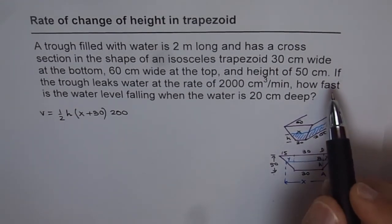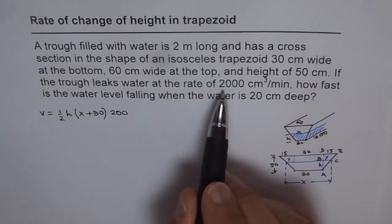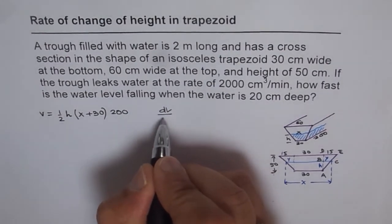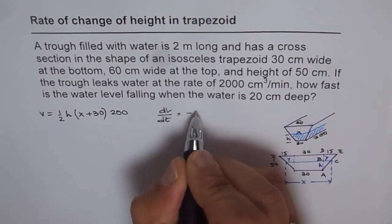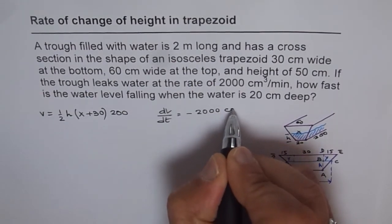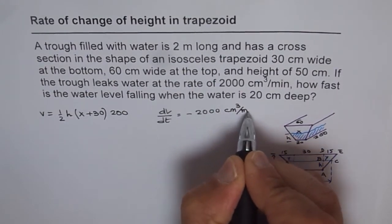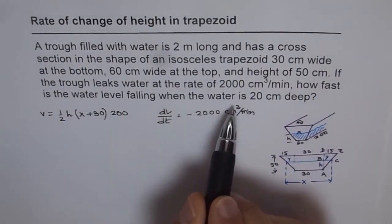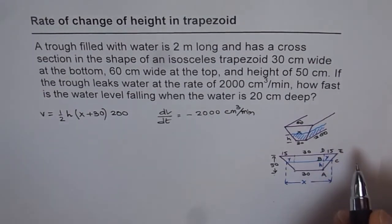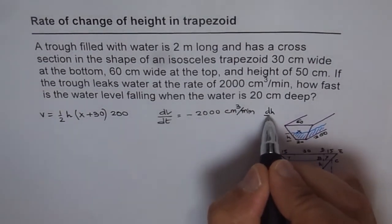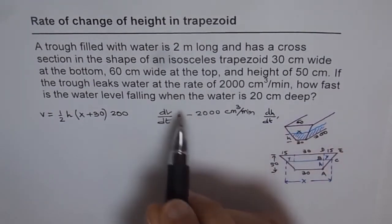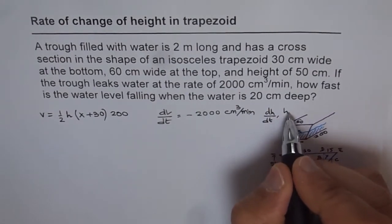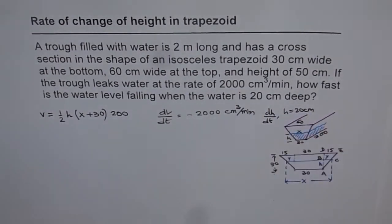You are also given that the trough leaks water at the rate of 2000 cubic centimeters per minute. That means dV/dt is minus 2000, since it is leaking. You need to find how fast the water level is falling when the water is 20 centimeters deep — that is, find dh/dt when h equals 20 centimeters.